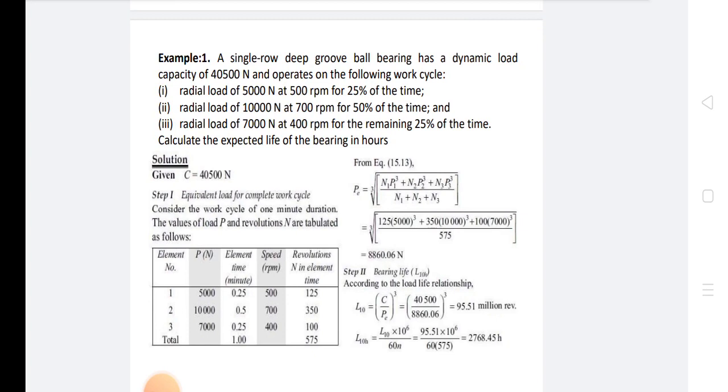Radial load of 10,000N at 700 RPM for 50% of the time. Calculate the expected life of the bearing in hours.